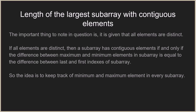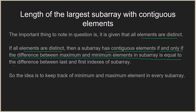An important thing to note is that all elements given are distinct — duplicate elements are not allowed. To solve this problem, we need to understand that if all elements are distinct, then a subarray has contiguous elements if and only if the difference between the maximum and the minimum elements in the subarray is equal to the difference between the last and the first index of the subarray.